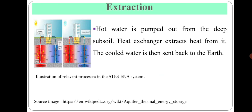There are steps to extract this geothermal energy from below the earth's surface. First is extraction: hot water is pumped out from deep in the soil. A heat exchanger extracts heat from that hot water, and the cooled water is then sent back to earth. As seen in the image, there are two pipes — one for pumping out the hot water, and another to send the remaining cooled water back to earth.